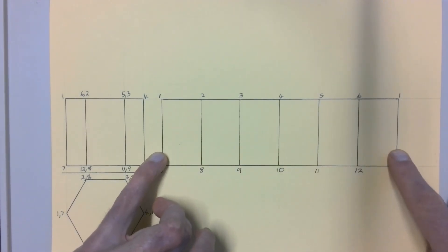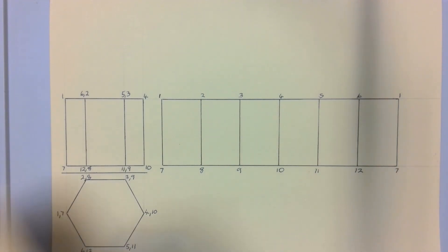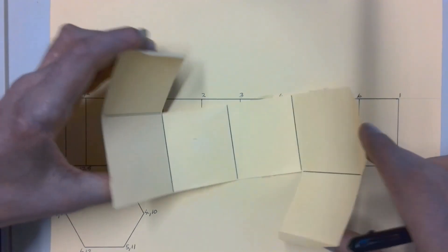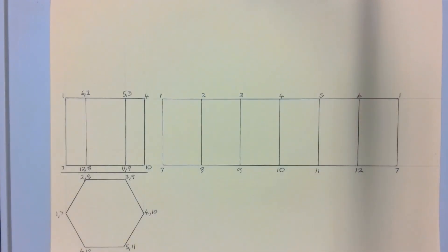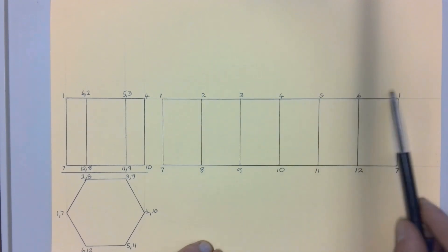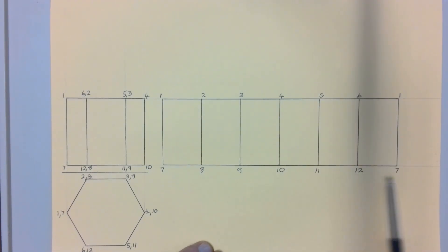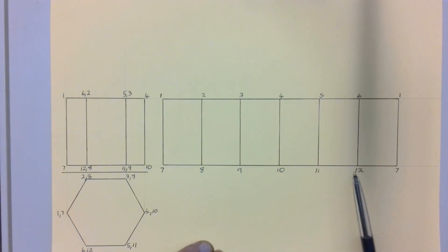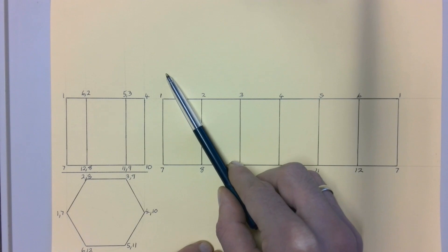Those faces only make up the development of the sides of our shape. We still need the top part and the bottom — the same as with the square-based prism, which had all the sides plus the bottom and top so that it was closed and didn't have a hole through it. We want the same thing here, so we're going to draw those in. We could draw the top attached to any one of the top faces. I'm going to draw my top face connected to line one–two, and my bottom one connected to line twelve–seven. We're going to draw in one hexagon shape for the top and another for the bottom.